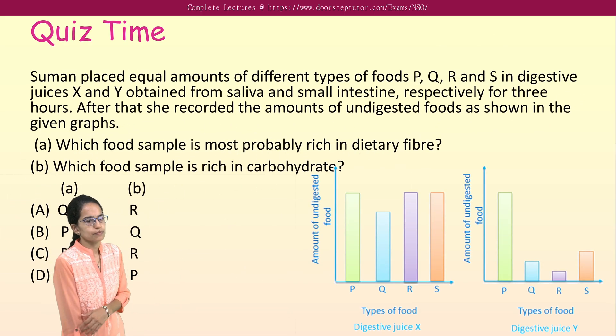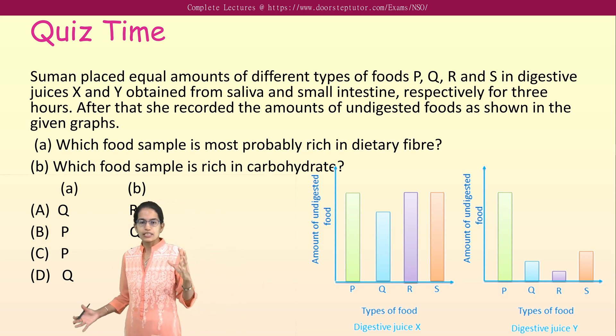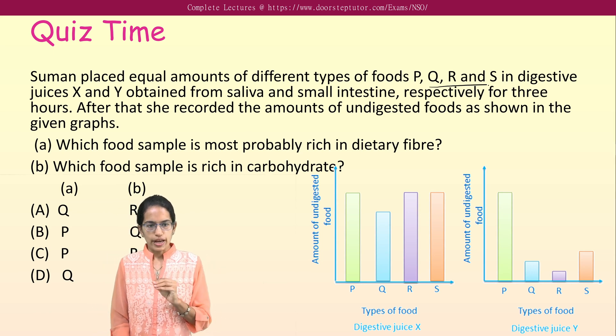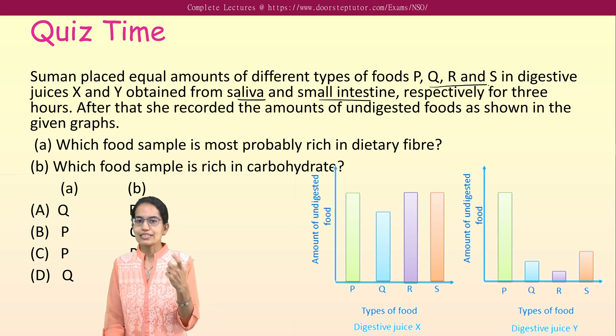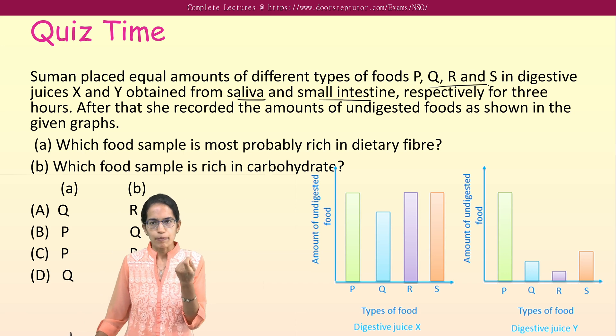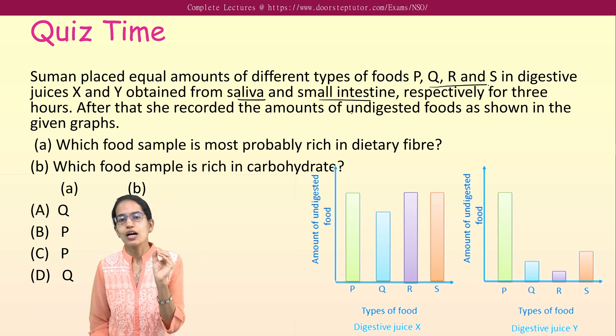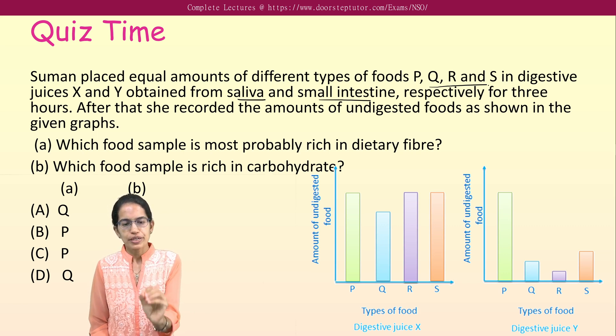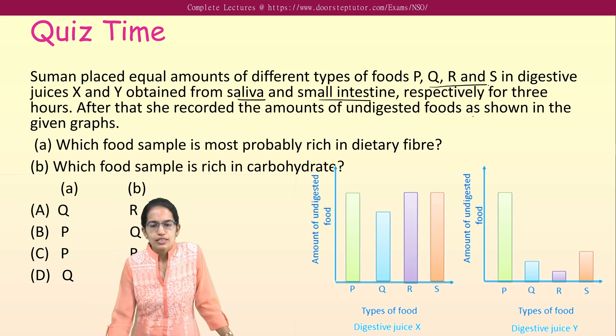The next question here. This is a question from digestive system. You have placed equal amount of food, which is P, Q, R, and S, in digestive juices X and Y, which is from saliva and small intestine. Saliva actually releases amylase, which digests carbohydrates. Small intestine also digests lactose and sucrose by lactase and sucrase. So both of them, we can say predominantly, we are talking about the amount of carbohydrate being digested.